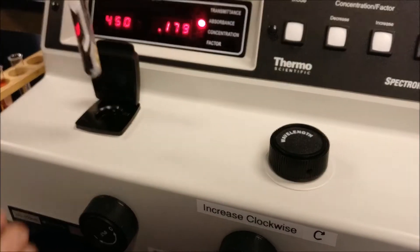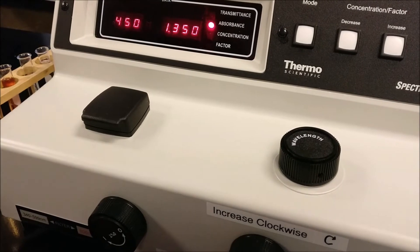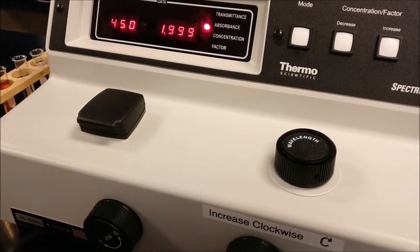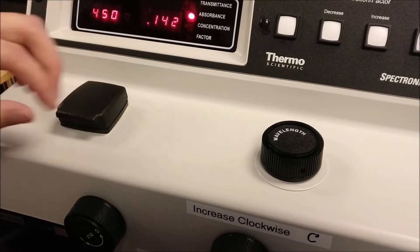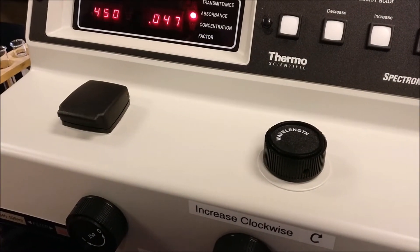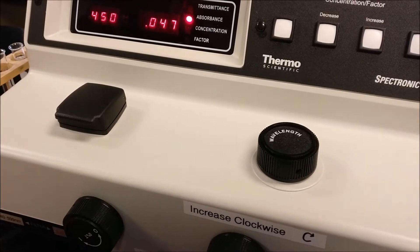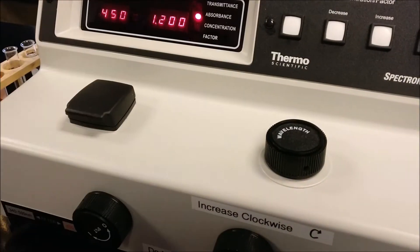Take out the water test tube from the sample holder. Close the holder and the absorbance should go back to 1.999. To test the absorbance of the first sample, place the test tube with the white label towards you into the holder. Wait for the reading to stay constant and record the number. Repeat the process for the remaining three test tubes.